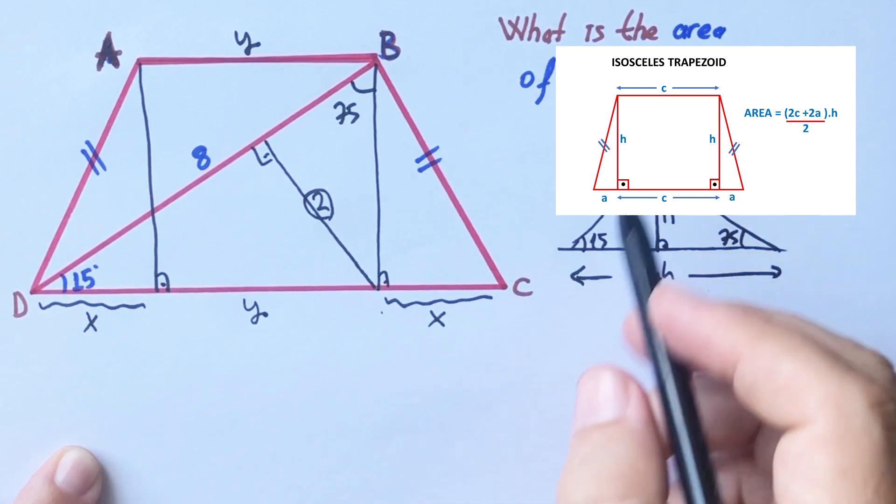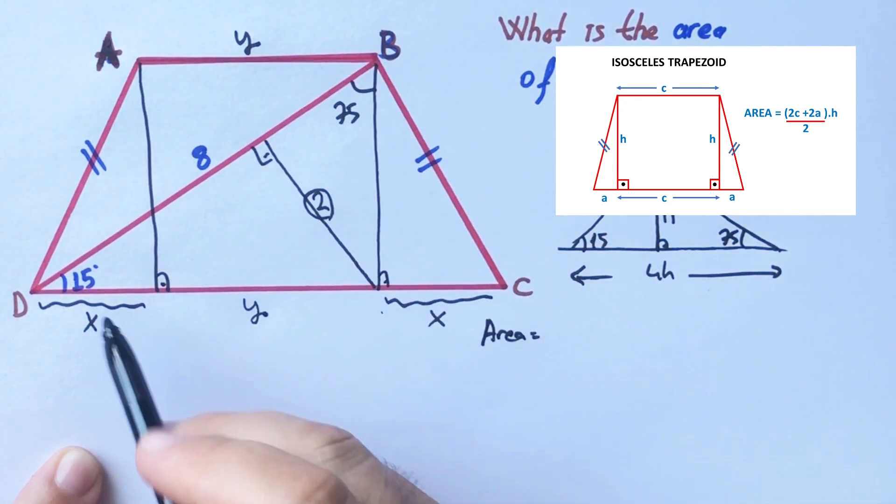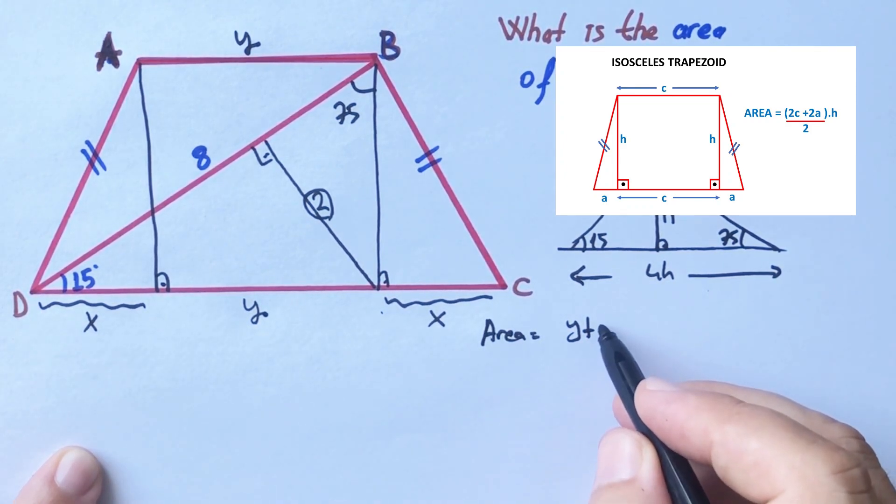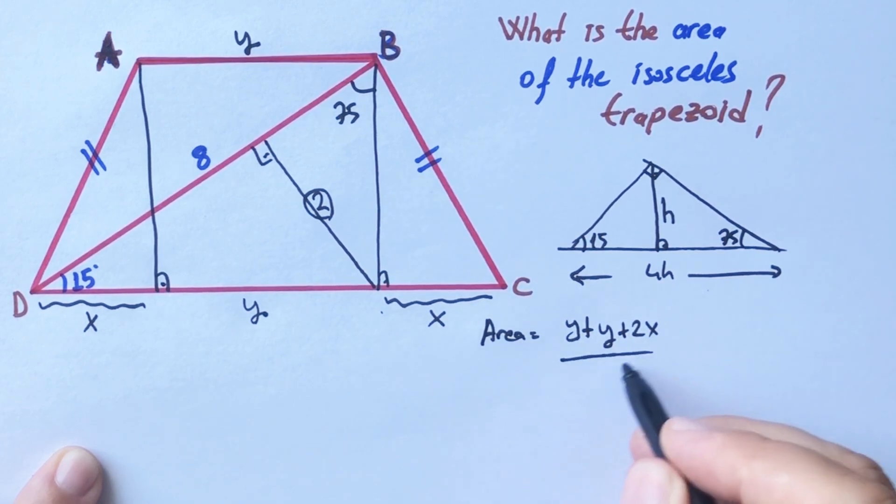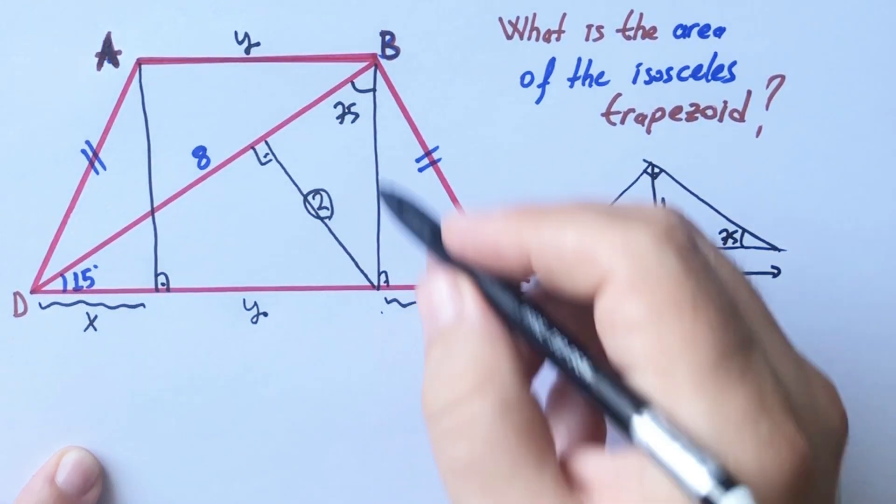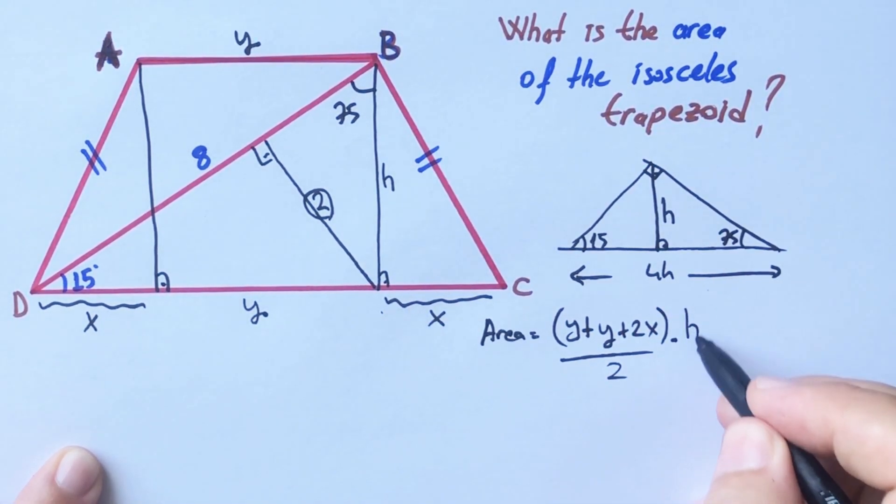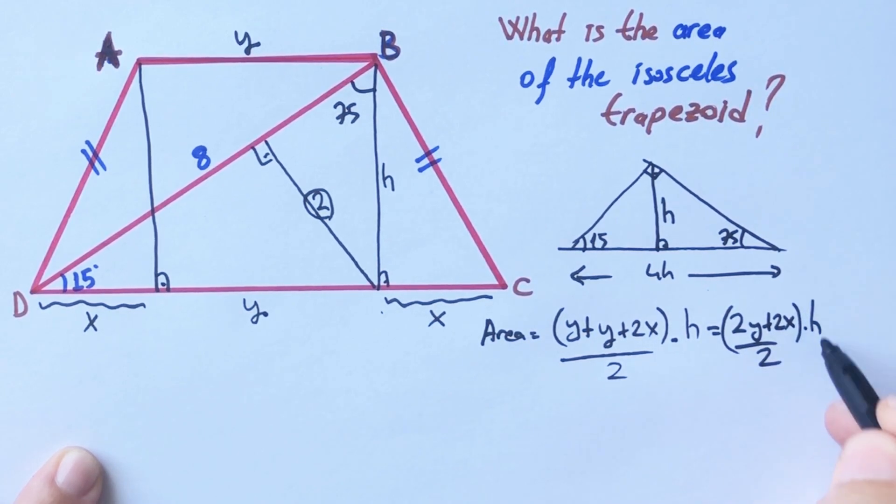And we know that the area of trapezoid must be equal to y plus y plus 2x, which is 2y plus 2x, over 2, times height.